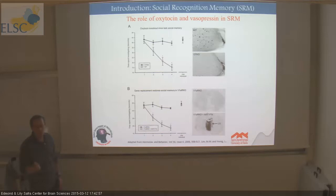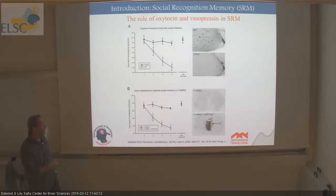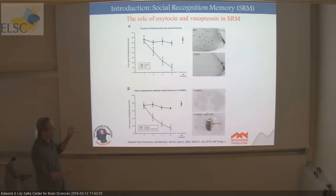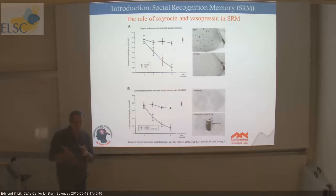Likewise, mice lacking the V1A receptor of vasopressin also do not show social recognition memory, but this memory can be restored if the receptor is overexpressed in the lateral septum by viral injection. It seems that vasopressin activity in the lateral septum — a very specific center of this network — is responsible for social recognition memory. So we have a dedicated network, specific molecular mechanisms, and modulators required for this type of memory.